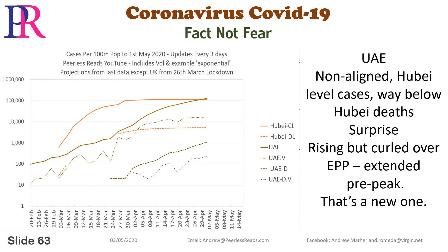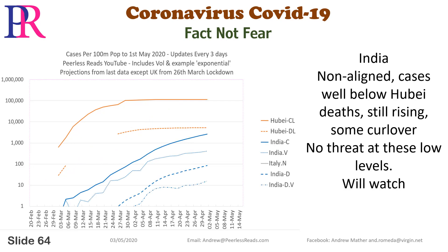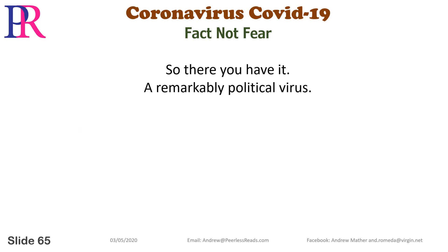UAE: non-aligned, Hubei-level cases, way below Hubei deaths. Rising but curled over, EPP — extended pre-peak. That's a new one. India: non-aligned cases well below Hubei. Deaths still rising with some curl over — no threat at these low levels. We'll watch.